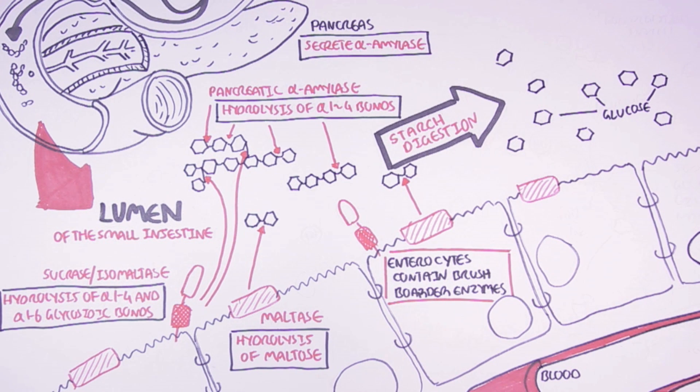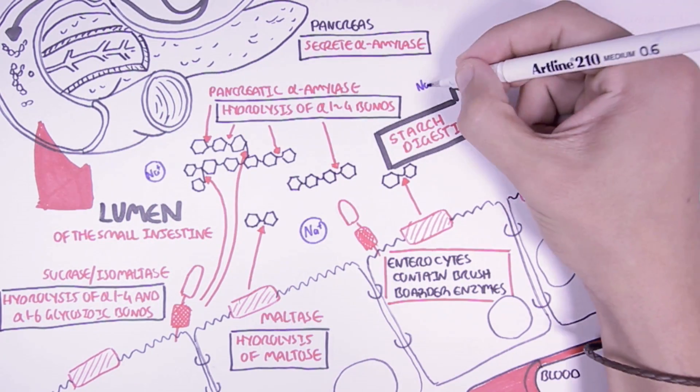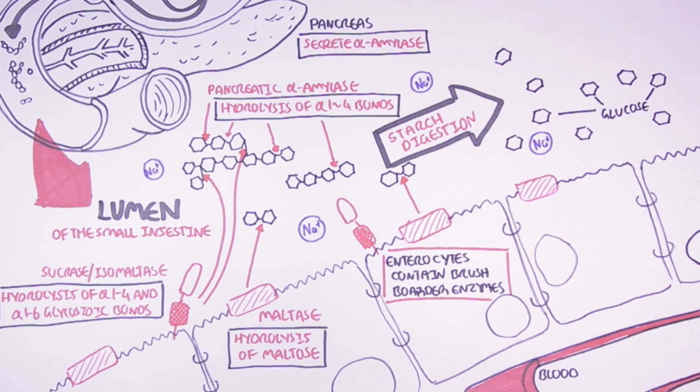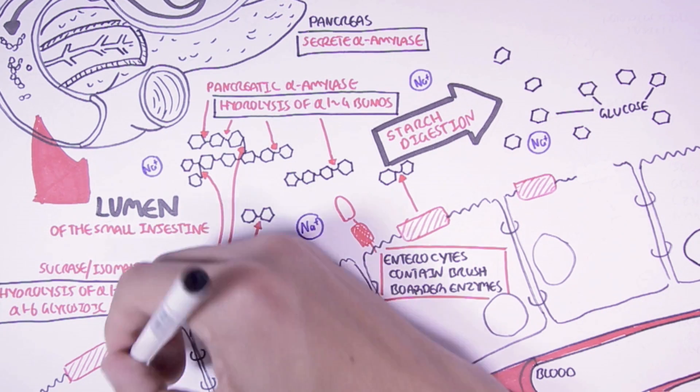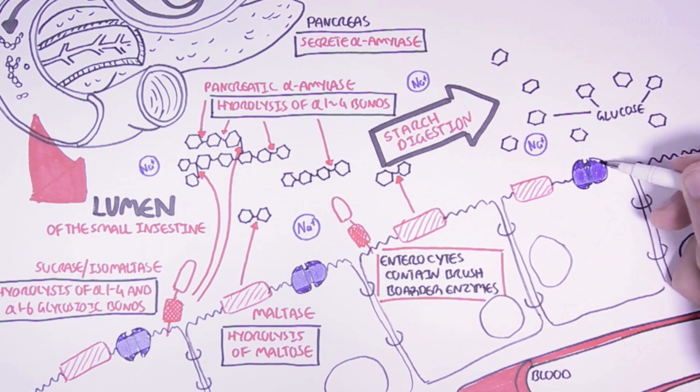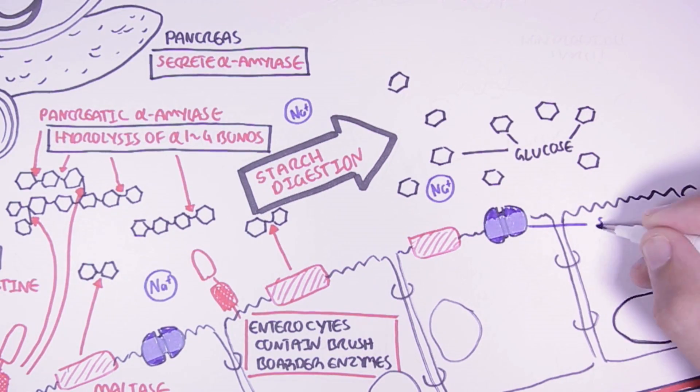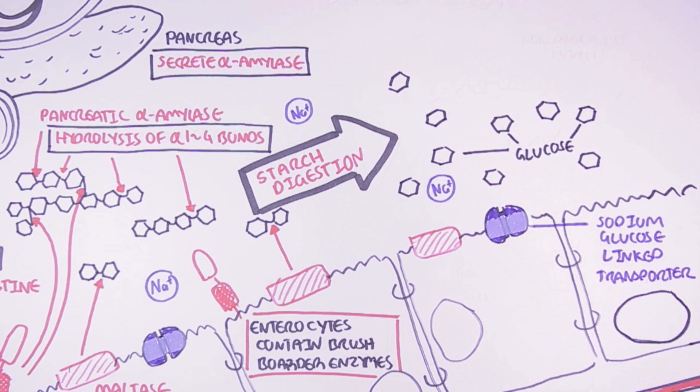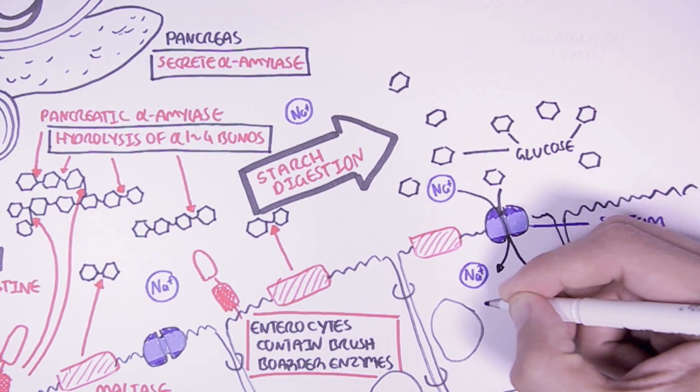Now within the lumen of the small intestine, we also have many sodium ions that actually play a critical role in the absorption of glucose into the body. What happens is that on enterocytes, we find these transporters called sodium glucose linked transporters, or SGLTs. These sodium glucose linked transporters are found on the apical surface of the enterocytes, so on the top. And what they do is that they function as a co-transporter for both sodium and glucose. Two sodium ions will enter for one glucose molecule.